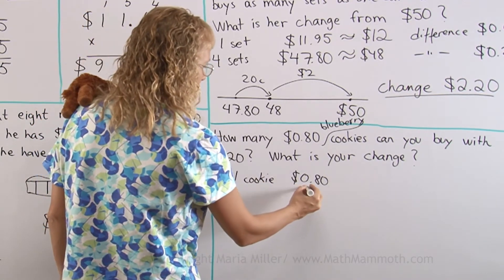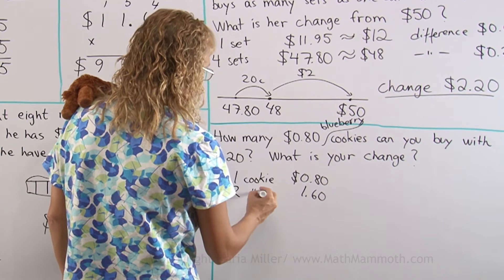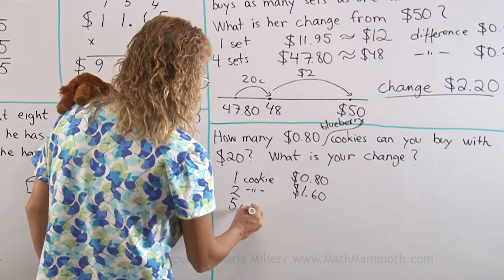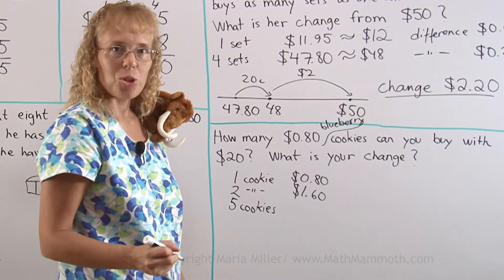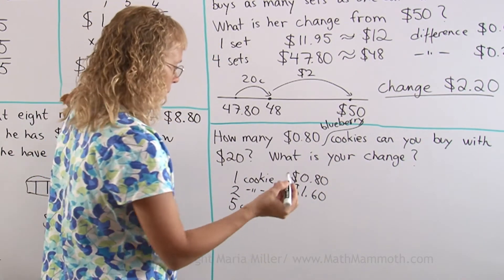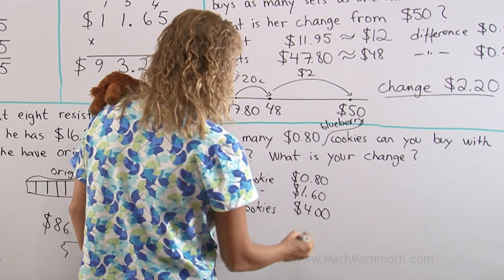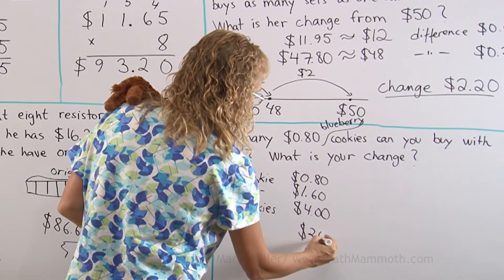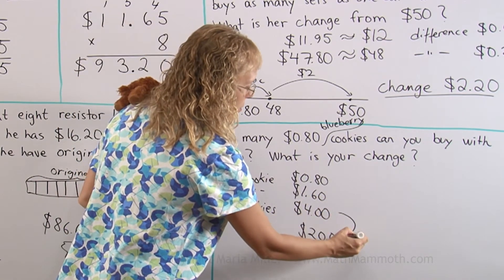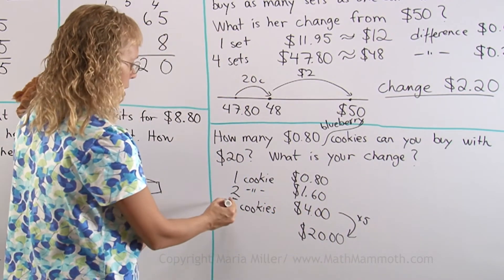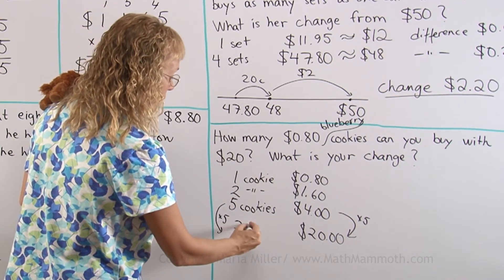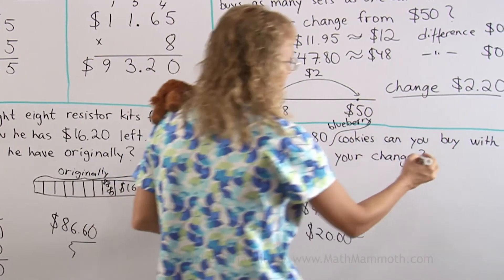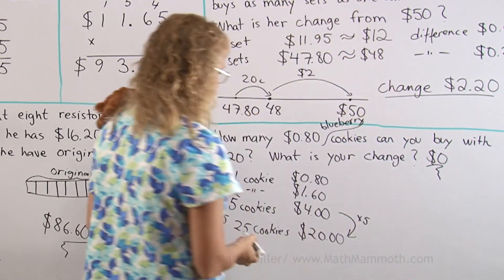If I double it, I get $1.60 for two cookies. But if I multiply by five — five cookies — I get a nice even number. Five times 80 cents is exactly $4.00, so that makes it easy. Now if you have $20.00 to spend on cookies, you multiply the five cookies by five, and over here you multiply the $4.00 by five too. Five times five is 25 cookies. And what is your change? Of course $0.00, because it divided evenly. Your change is $0.00 and you can buy 25 cookies.